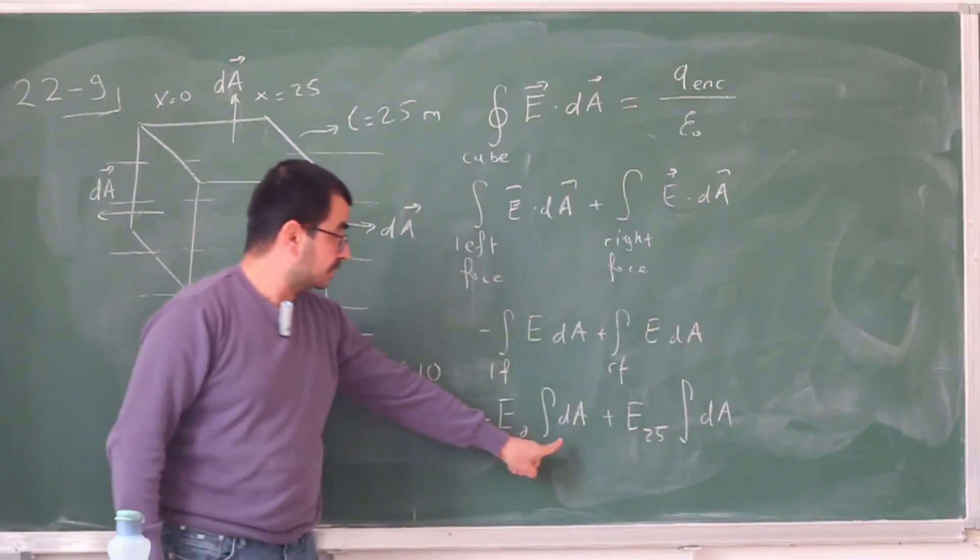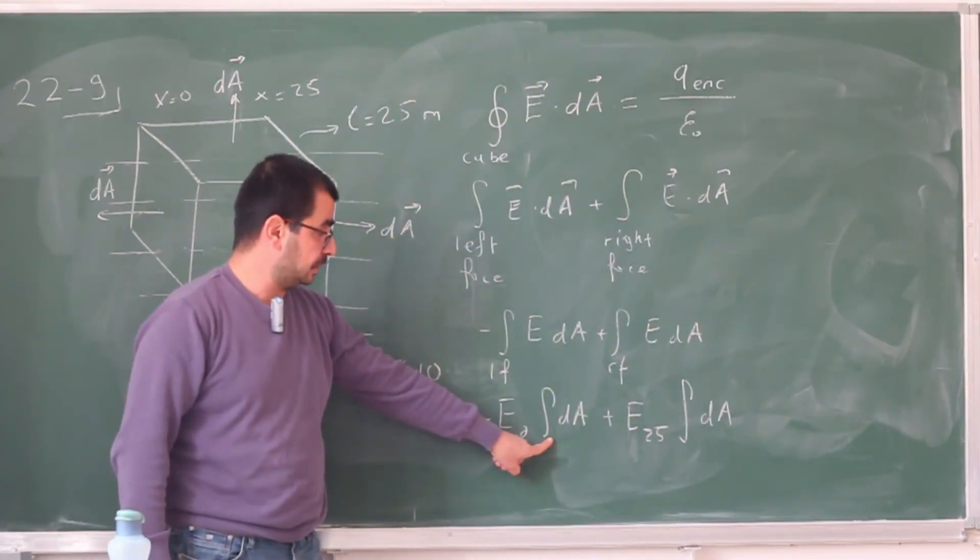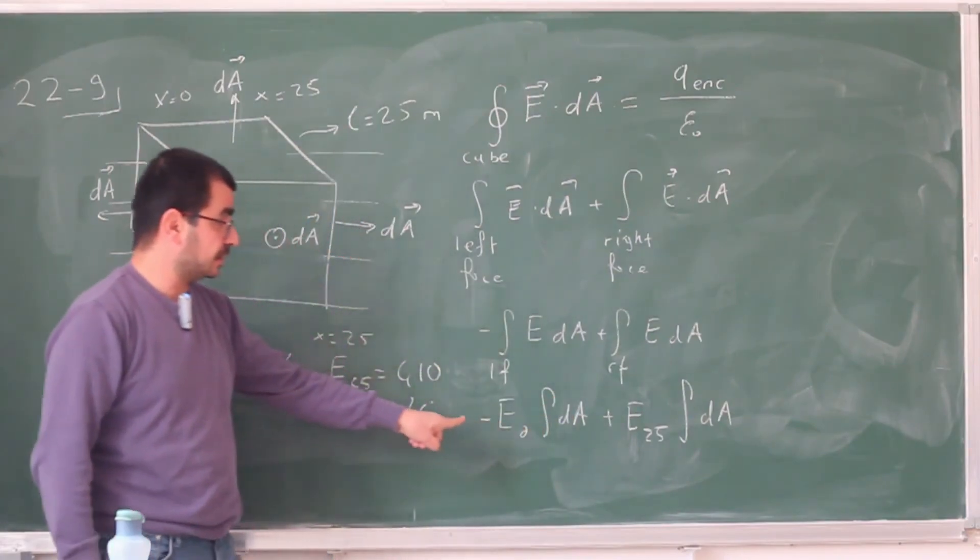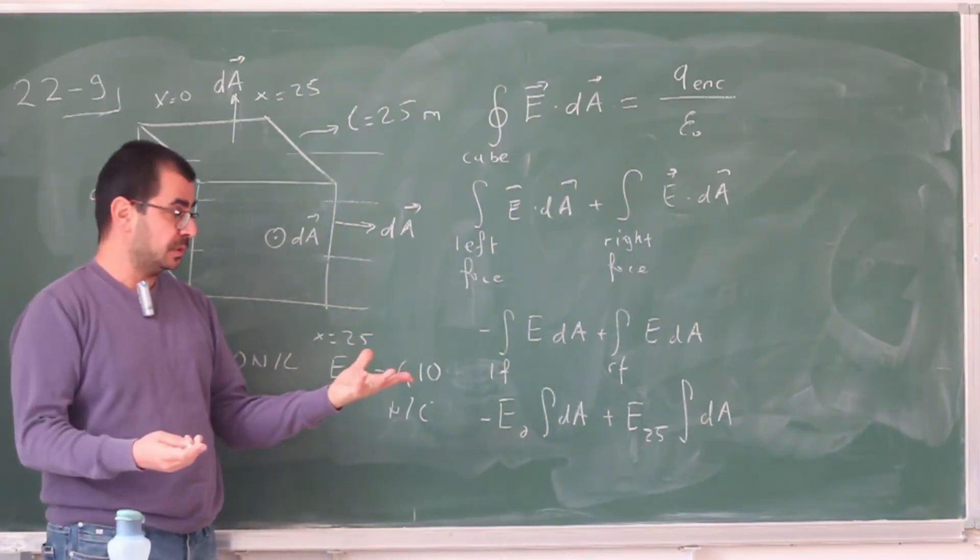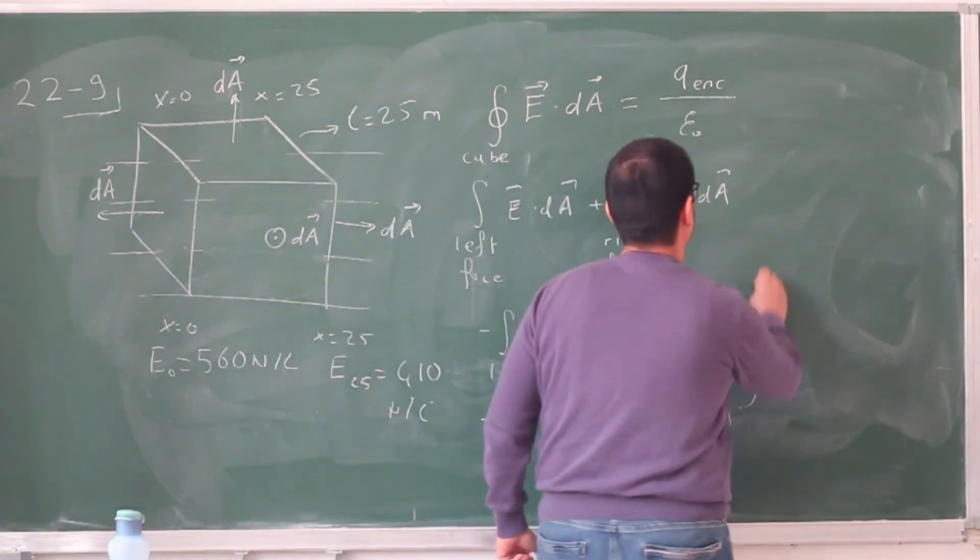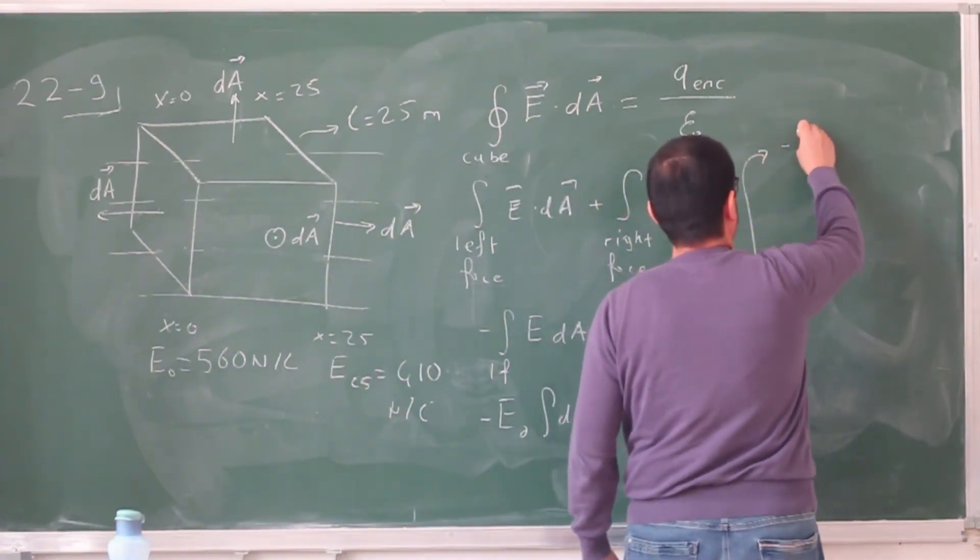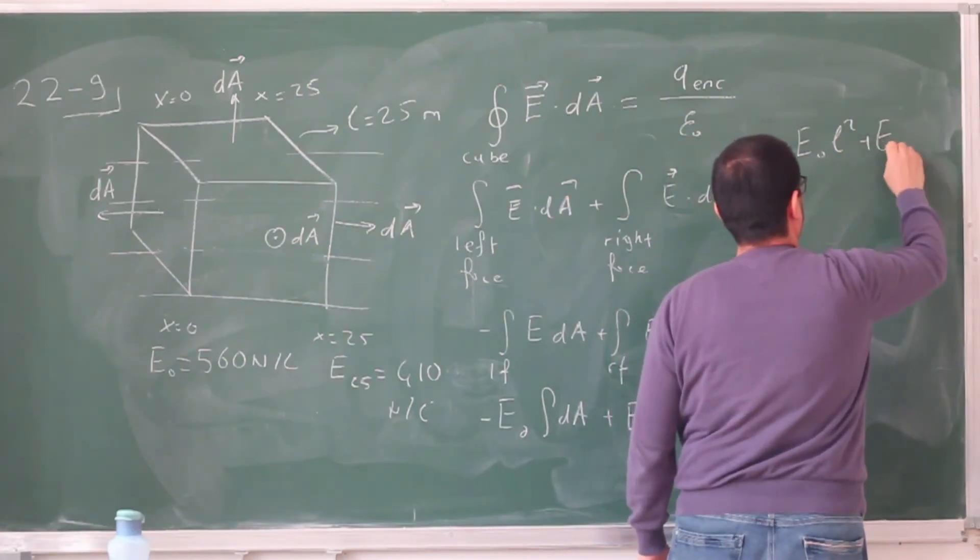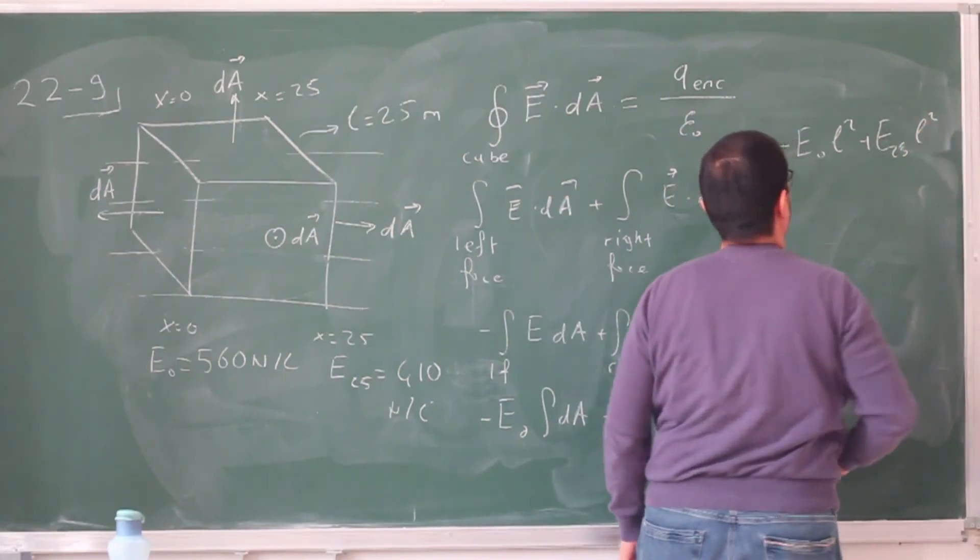And finally, these integrals, they are in fact identical to each other. These are just the sum of the infinitesimal area elements over the faces. And that's just the area of the face. And that's just L squared.